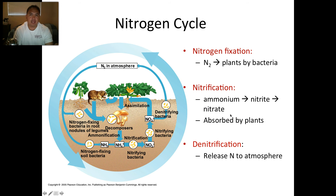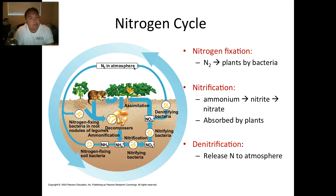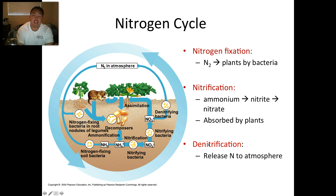Nitrate is what can be absorbed by plants — that's the nutrient that plants need to grow. Denitrification: once the decomposers get a hold of it, they break it down. Nitrifying bacteria process it, and then denitrifying bacteria bring it back into the atmosphere. So that's how nitrogen got into the atmosphere in the first place. It's a small piece for the AP exam, but as long as you know these big three — nitrogen is fixed, then it's nitrified so plants can use it, then it's denitrified and goes back into the atmosphere — you'll be okay.